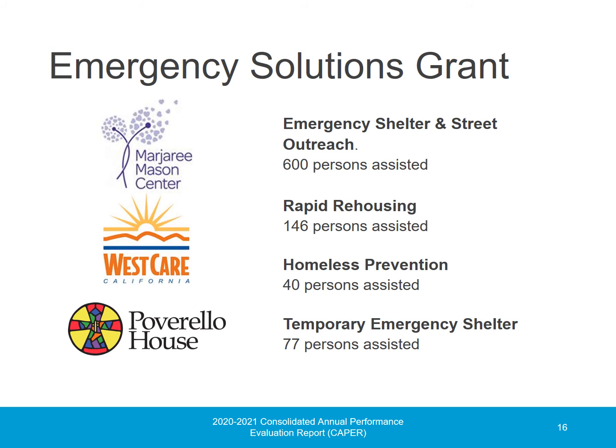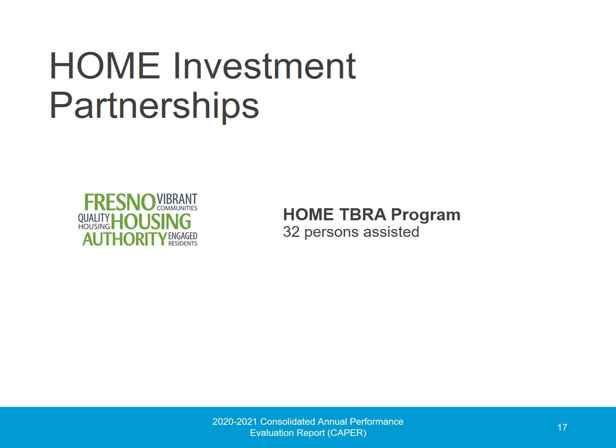Through the Emergency Solutions Grant, the City partnered with the Marjory Mason Center, West Care, and Pavarello House to provide emergency shelter, street outreach services, rapid rehousing, homelessness prevention, and temporary emergency shelter. In total, 786 homeless and at-risk persons were served in program year 2020 through ESG, and 77 persons were served using ESG coronavirus funds. Tenant-based rental assistance programs, or TBRA, subsidized private market units for homeless and low-income households. During the program year, the Fresno Housing Authority used HOME funds to assist 32 persons.